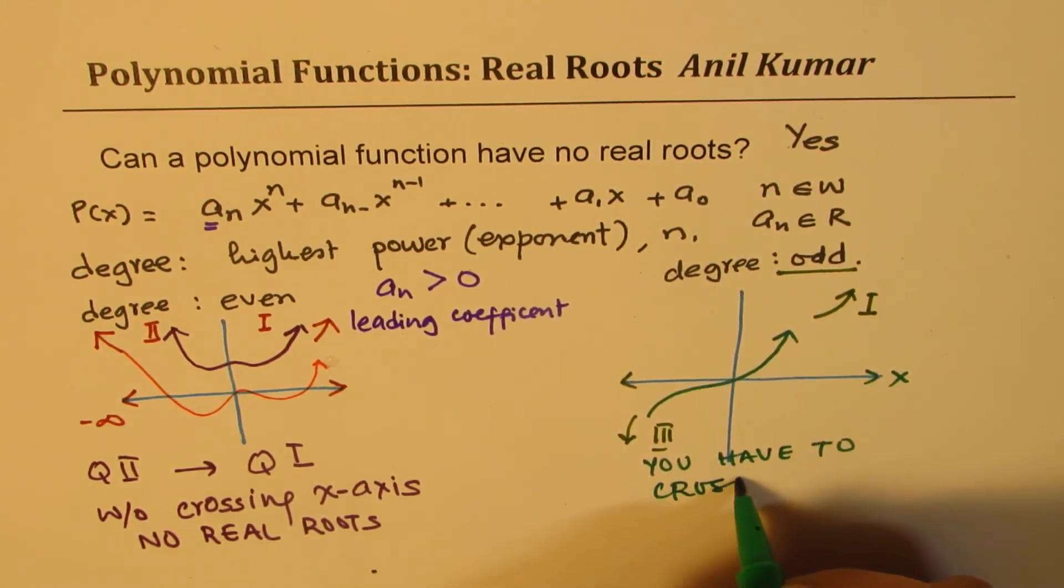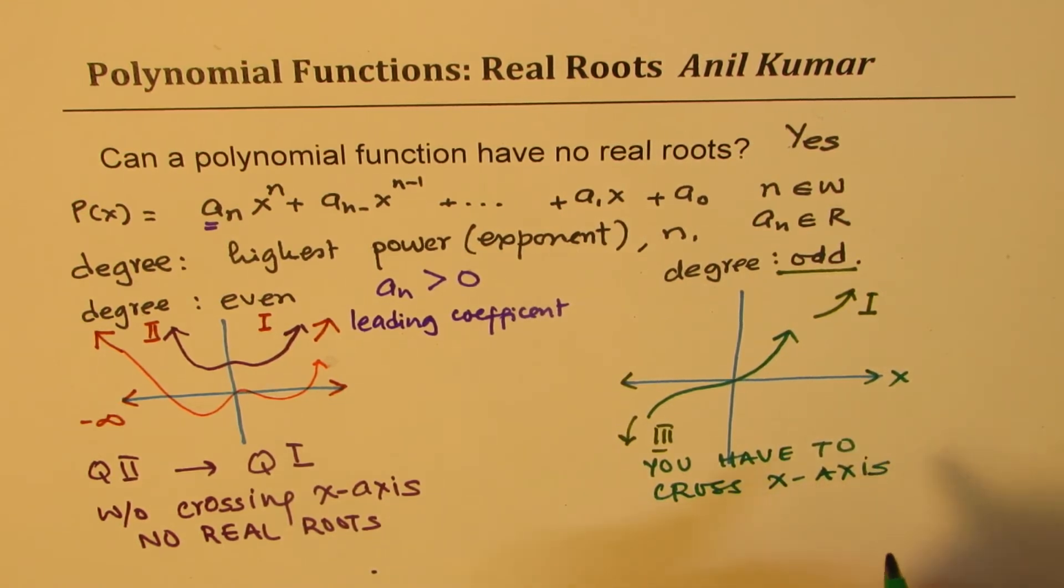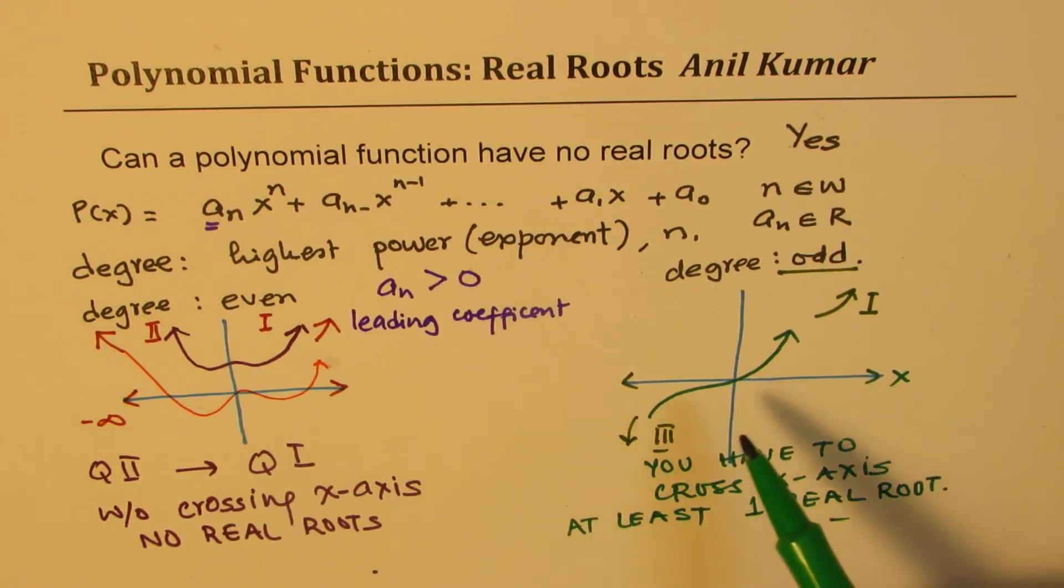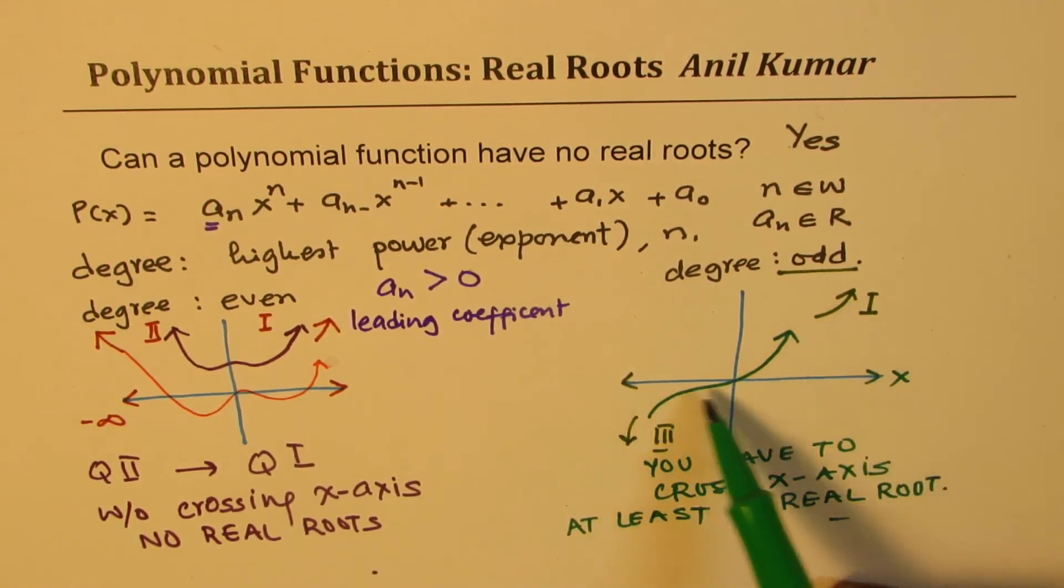So in this case, we have at least one real root. You cannot go from quadrant three to one without crossing the x-axis. So you have to have one real root.